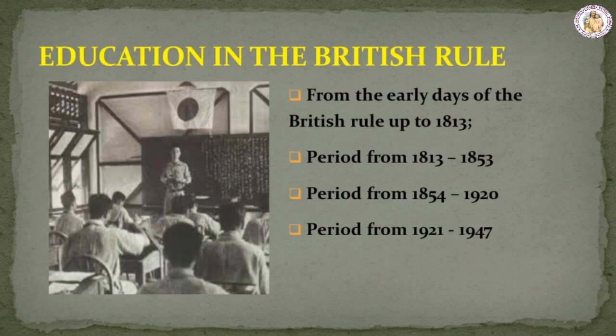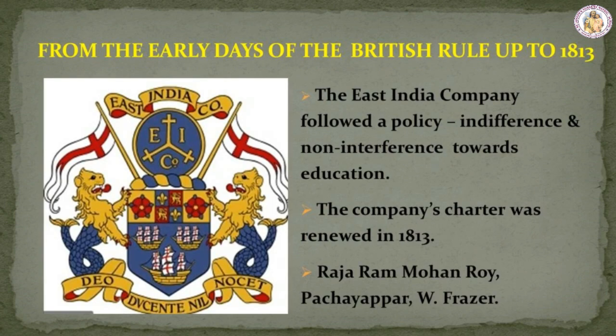Education in British Rule. The history of education under British Rule can be divided into four periods: from the early days up to 1813; from 1813 to 1853; from 1854 to 1920; and from 1921 to 1947. During its early days, the East India Company followed a policy of indifference and non-interference towards education, as this sector did not form part of its program. The company's charter was renewed in 1813, which compelled the company to assume responsibility for the education of Indians. Raja Ram Mohanroy of Bengal, Pachyapar of Madras, and W. Fraser of Delhi contributed to the cause of education.